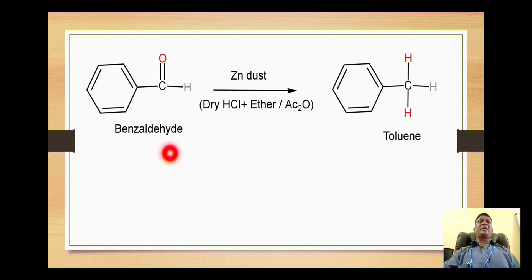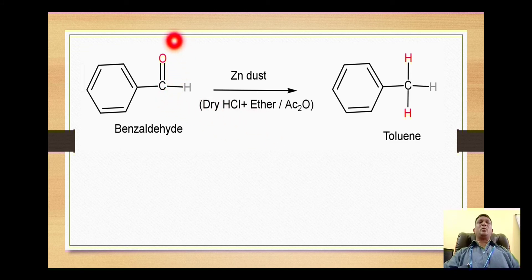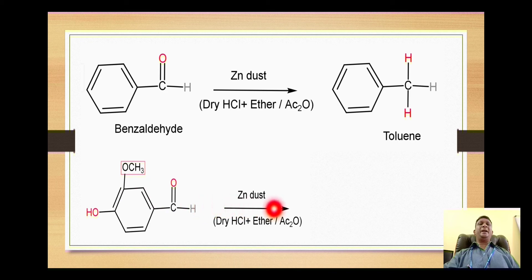In case of benzaldehyde, we will also use the alternative condition — zinc dust with a mixture of dry hydrochloric acid and ether or acetic anhydride. The carbonyl oxygen is replaced with two hydrogens, and thus benzaldehyde is converted to toluene.